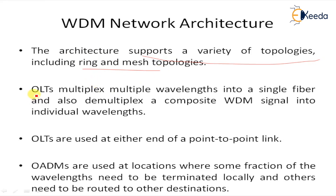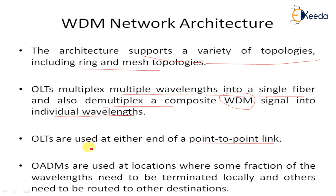The OLT — optical line terminal — multiplexes multiple wavelengths into a single fiber and also demultiplexes a composite WDM signal into individual wavelengths. OLTs are used at either end of a point-to-point link. The OADM — optical add-drop multiplexer — is used at locations where some fractions of the wavelengths need to be terminated locally and others need to be routed to particular destinations or receivers.